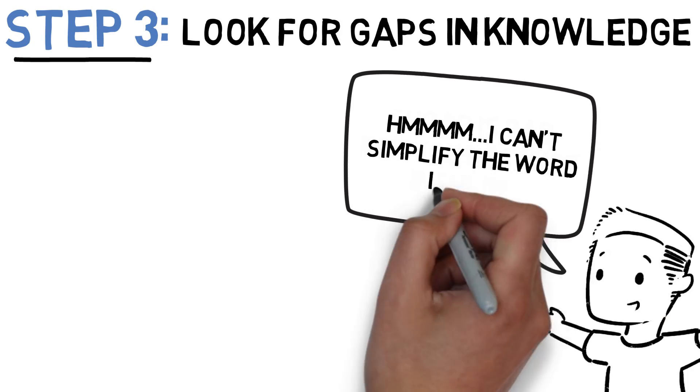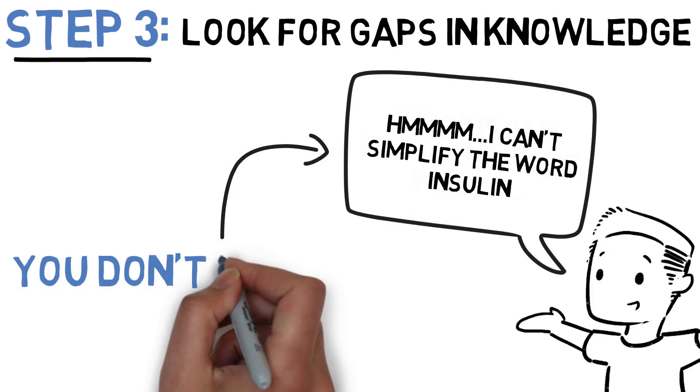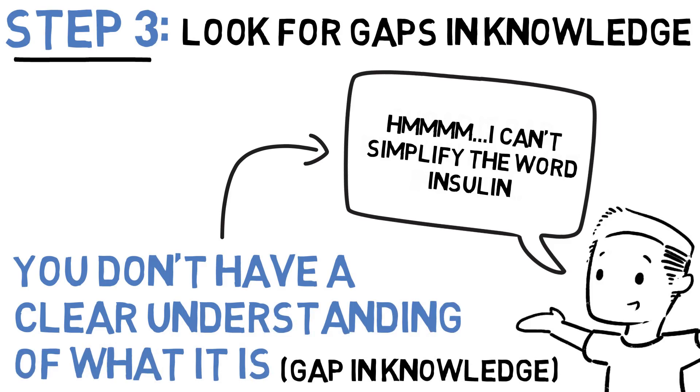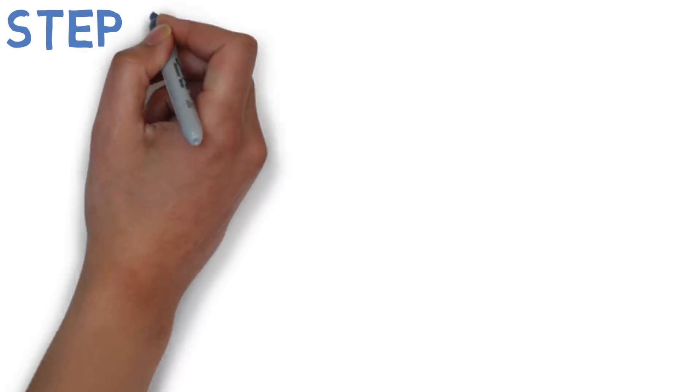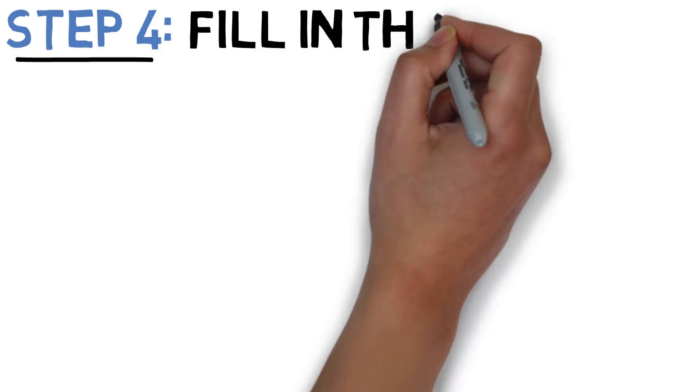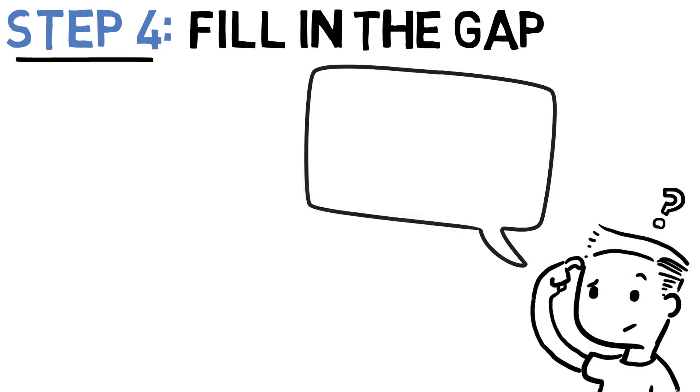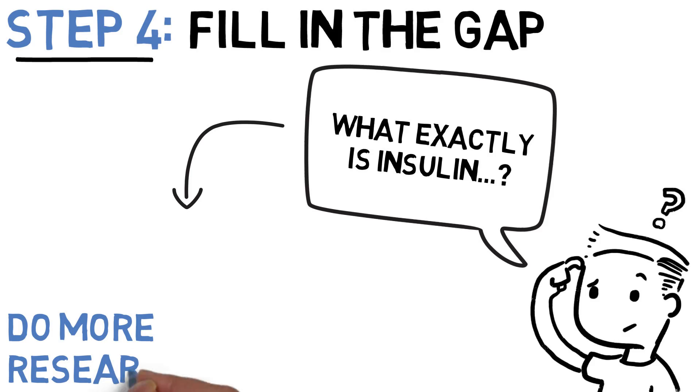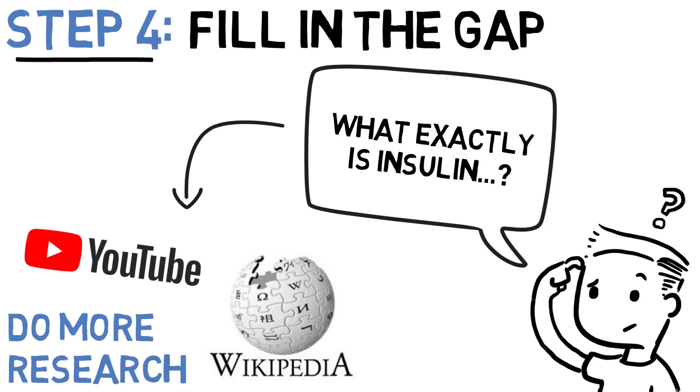Yes, you can toss the word around and you can use it correctly in a sentence, but you don't know exactly what it is or how it works. If you did, you would be able to explain it. The fourth step is to fill in this gap. Go back to your reading or go back onto the internet and fill in this gap of knowledge. In our example of insulin, this would require you to maybe look up the Wikipedia page or watch a couple more videos on the topic.